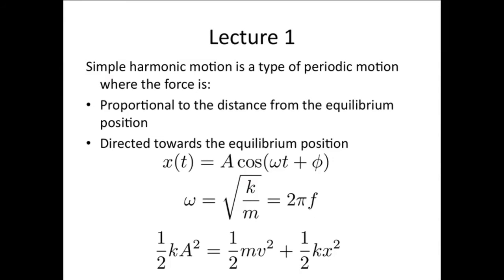In lecture 1, we looked at simple harmonic motion. It's a type of periodic motion where the force is proportional to the distance from the equilibrium position and directed towards the equilibrium position. We saw that x(t) equals A cos(ωt + φ) is a solution to this problem. For a spring and a mass, we showed that ω equals root k on m, and ω is just the angular frequency 2πf.